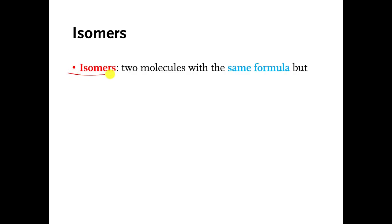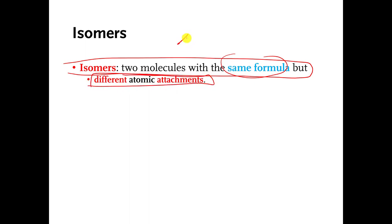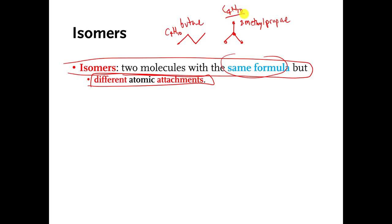Last week I gave a definition for what isomers are. Isomers are molecules that have the same simple formula, but the atoms are attached in different ways. One of the examples I gave was butane, with formula C4H10, and this other molecule called 2-methylpropane, which is also C4H10. But the atoms are attached in different ways, so these two molecules are isomers of each other.